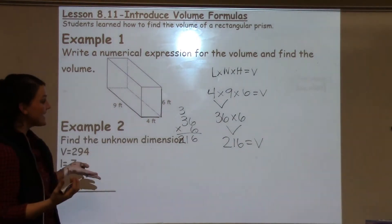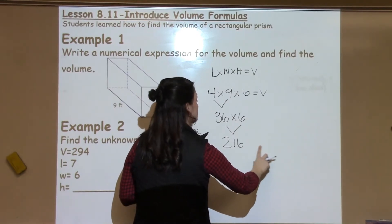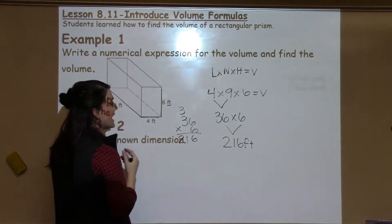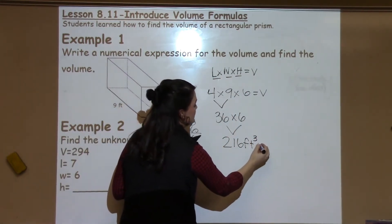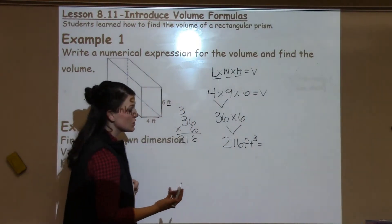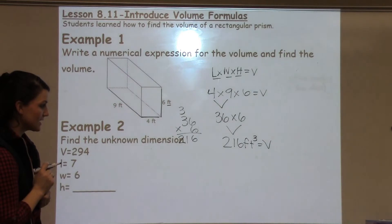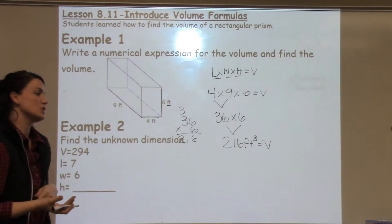Now, I cannot just leave it as 216 when I know what my unit of measure is. I'm working in feet. I need to include that label as well. And then because I'm working with volume and three different dimensions, I'm going to add my cubed unit as well with that little 3 there. So for a final answer of 216 feet cubed.